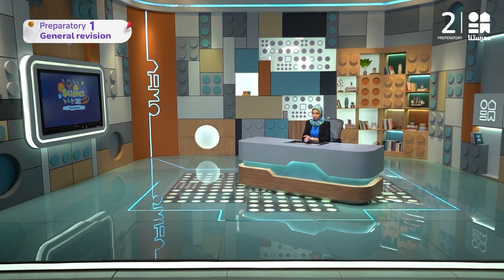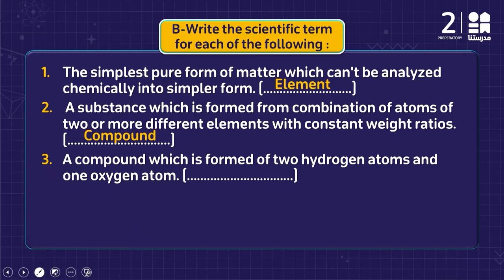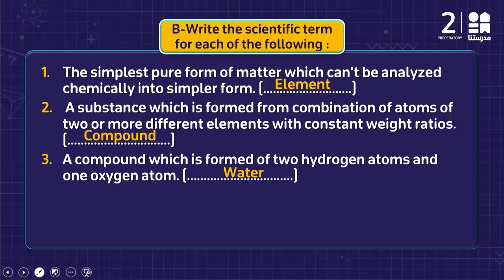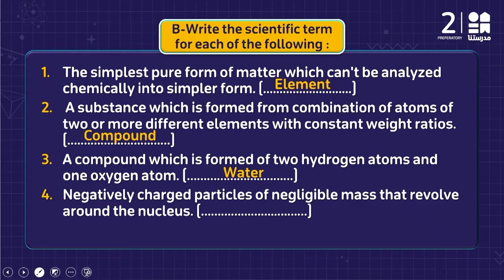For example, water is a compound formed of two hydrogen atoms and one oxygen atom — H₂O. It consists of two hydrogen atoms (H₂) and one oxygen atom (O).